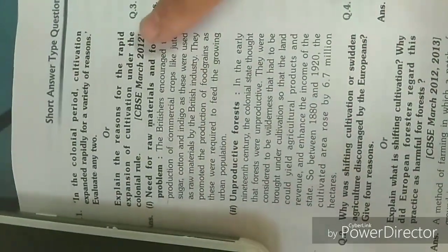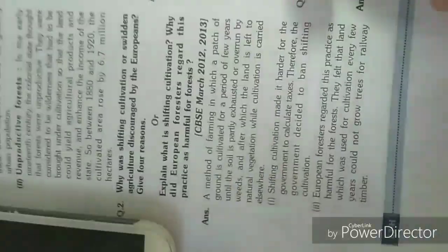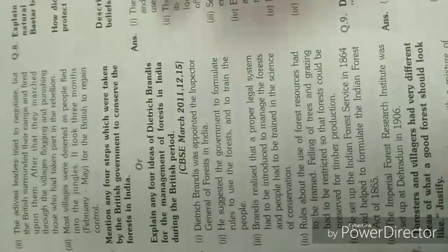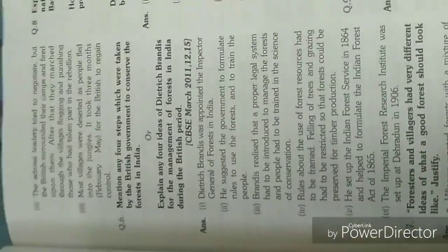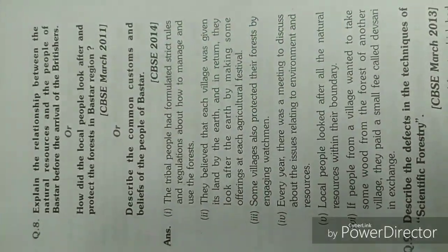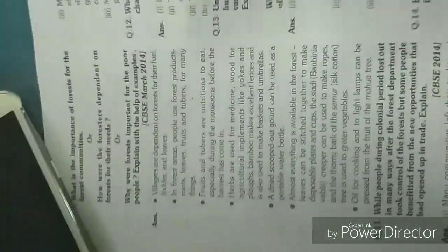Now some three-mark important questions. The first one is very important, and then the second one is this — it's continued over here. The third question is important for three marks, and the fourth, fifth, and sixth are all important. You just need to read them once and you'll get a hold on them. Another important three-mark question is about the common customs and beliefs of the people of pastoralists. Next is the importance of forest for the forest communities, which is also important for three marks.